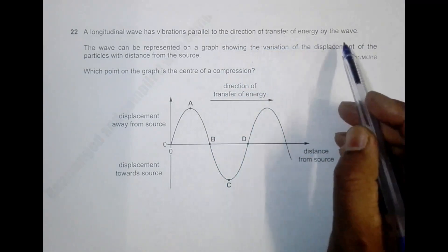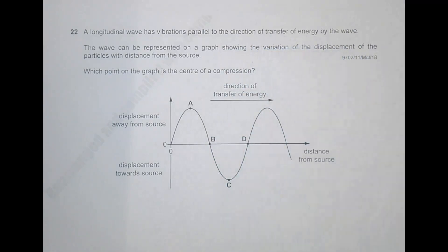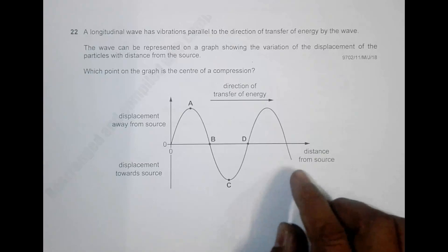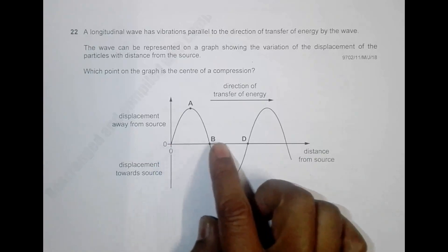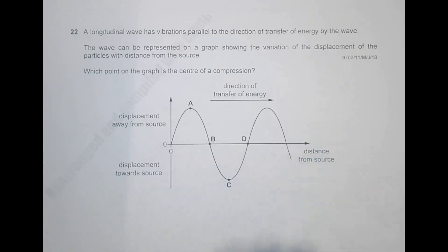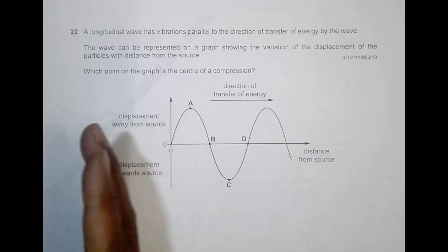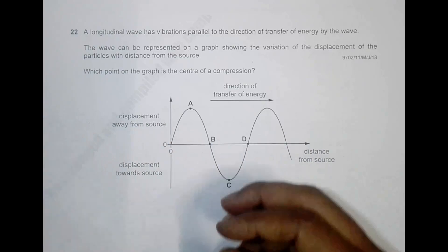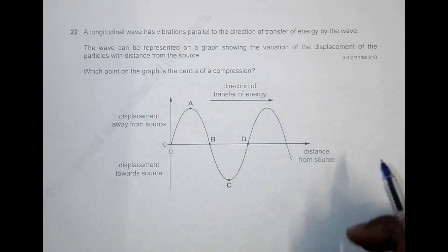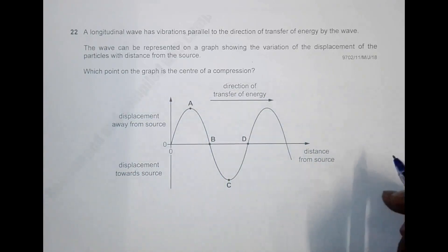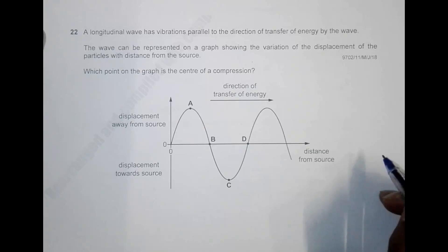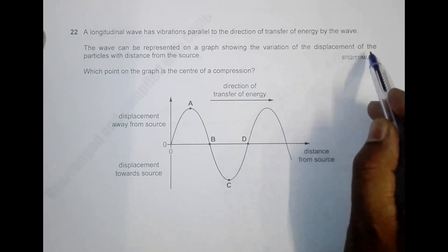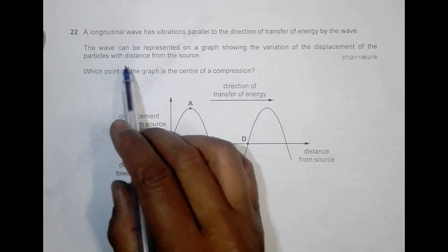Looking at the diagram, it shows the distance from the source, so the source is somewhere here, and this axis represents the distance from the source. The wave can be represented on a graph showing the variation of the displacement of the particles with distance from the source.